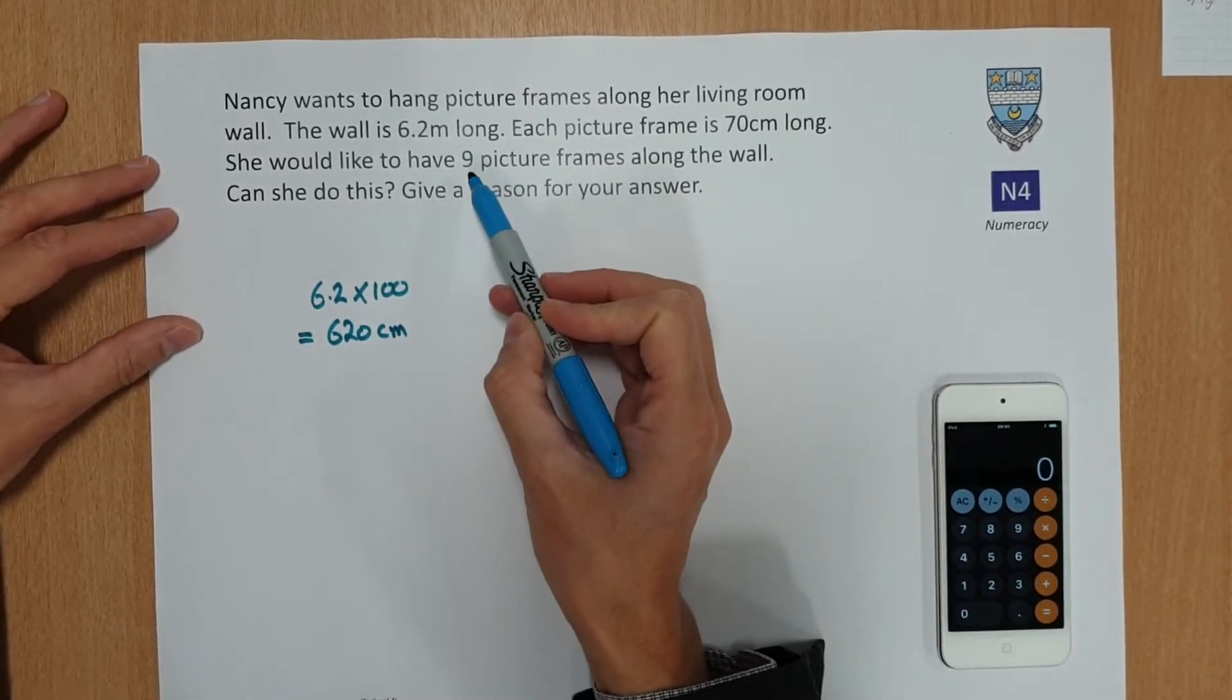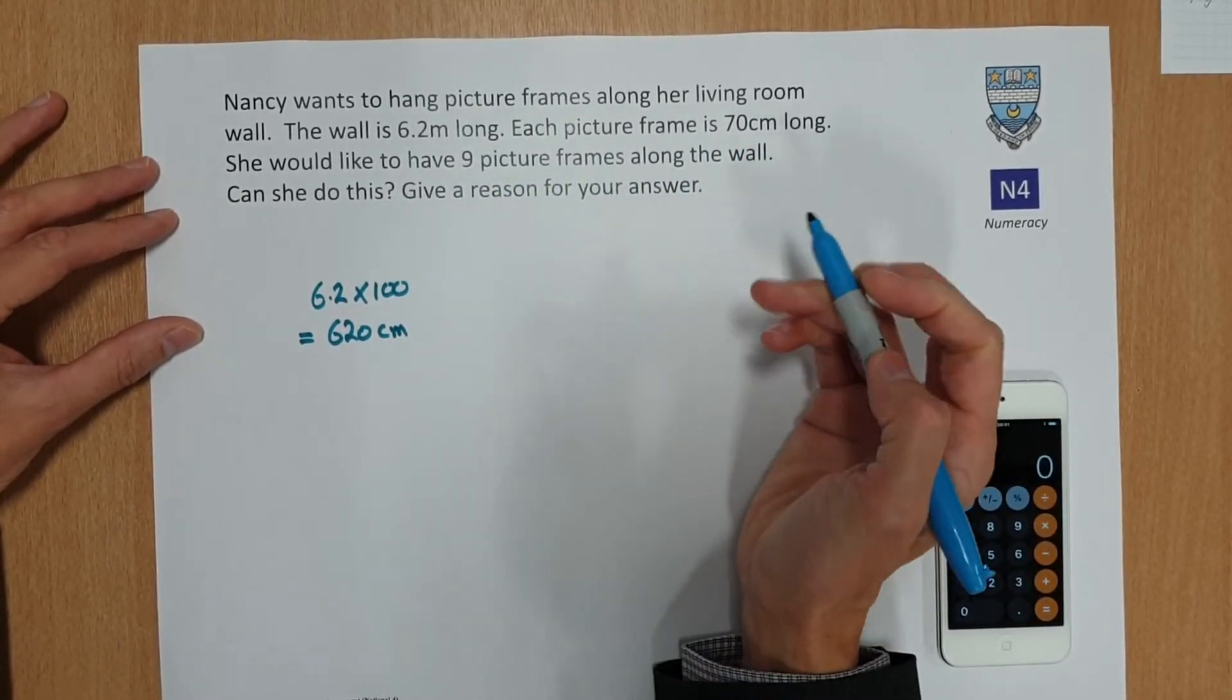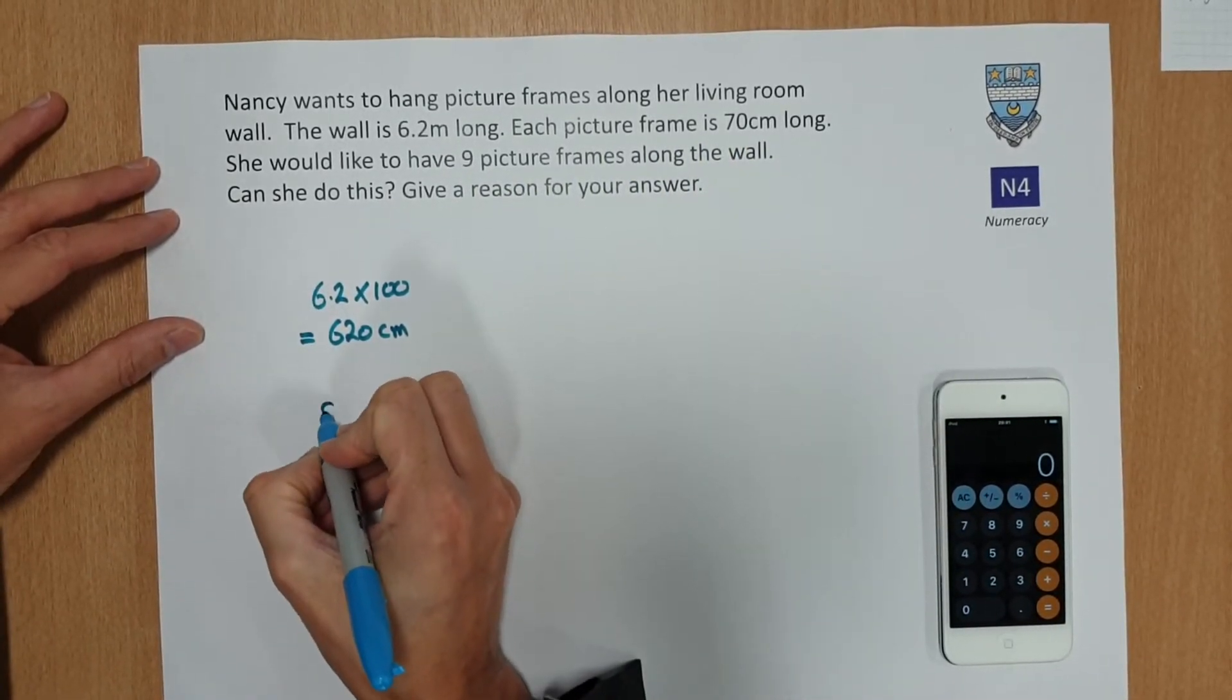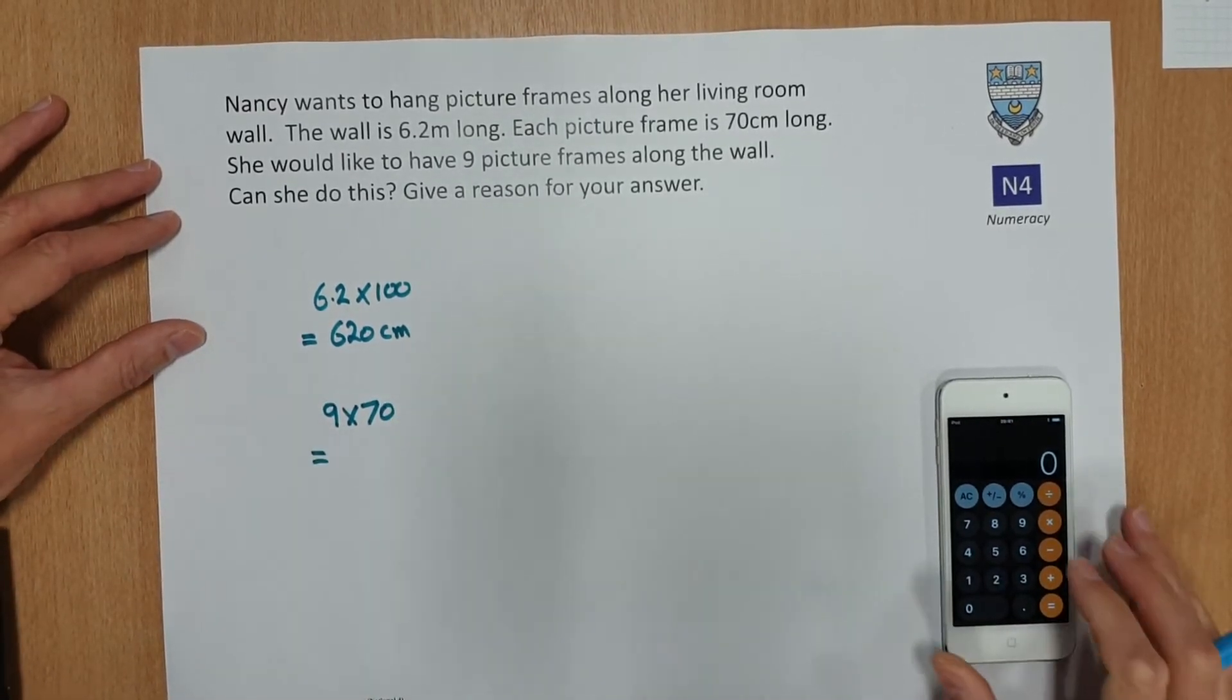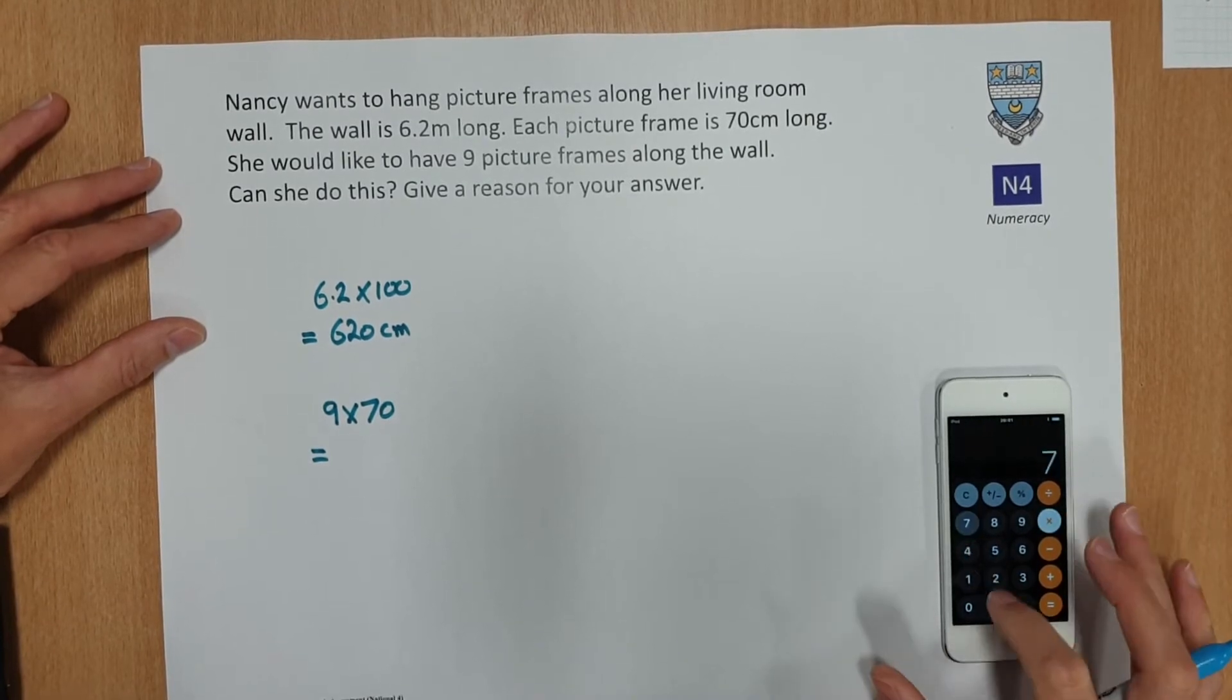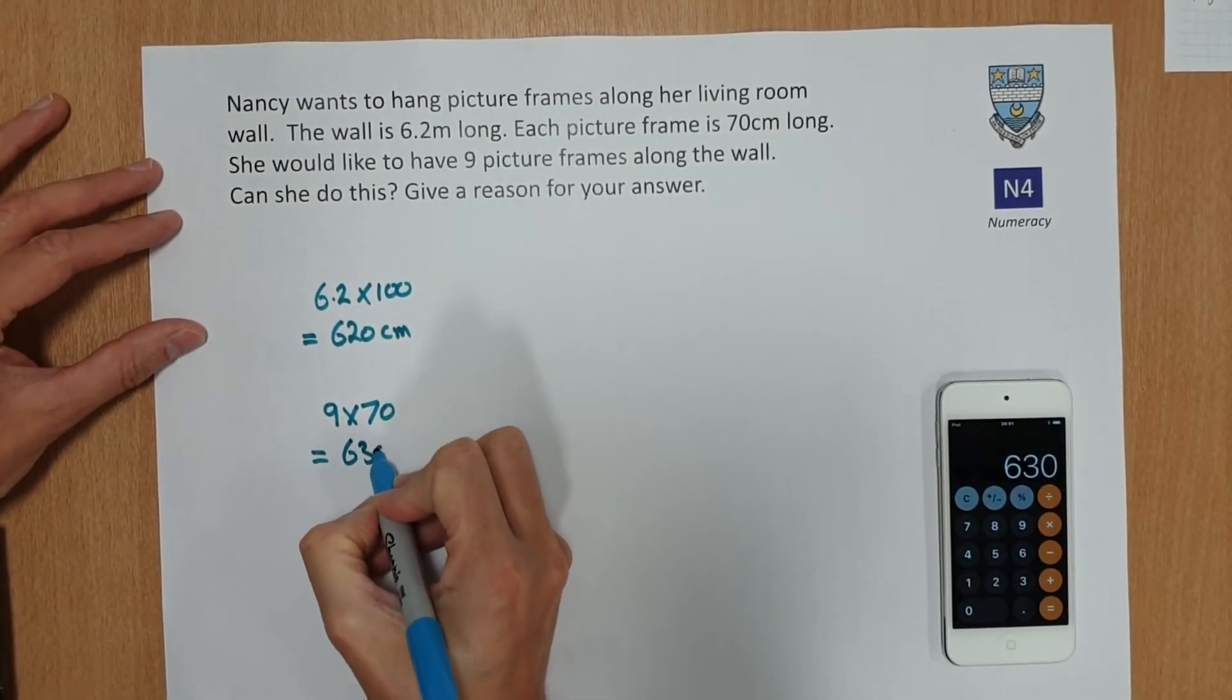And then we want to know how long nine pictures next to each other would be. So we need to work out nine times 70 to get how long that would be. Double check that on your calculator if you need to. That'd be 630 centimeters.